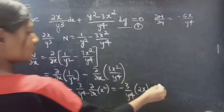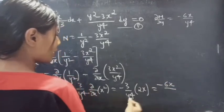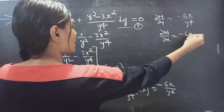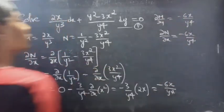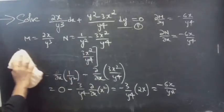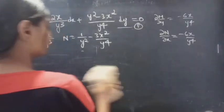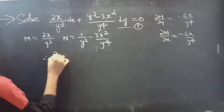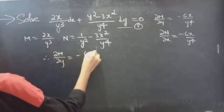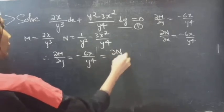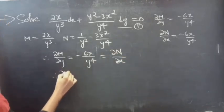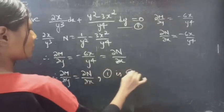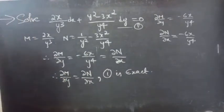So ∂N/∂x = 0 − (3 / y⁴) · ∂(x²)/∂x = −(3 / y⁴) · 2x = −6x / y⁴. Therefore ∂M/∂y = ∂N/∂x = −6x / y⁴, which confirms that the given differential equation is an exact equation.